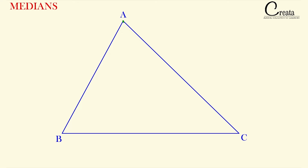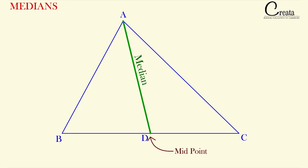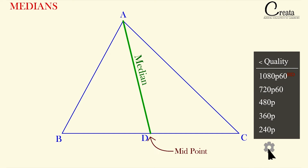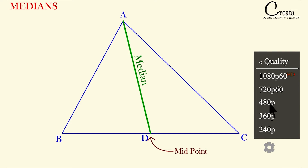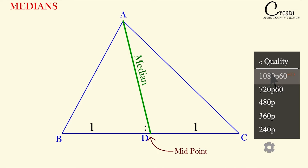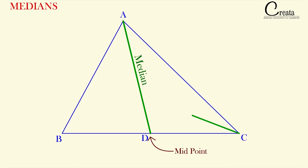Median is a line segment that joins the vertex with the midpoint of the opposite side. This is the midpoint, so the median divides the opposite side into two equal portions — we can say a 1:1 ratio. A triangle has three vertices and three sides, so it can have a total of three medians.